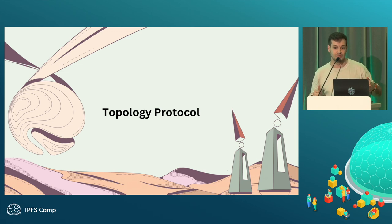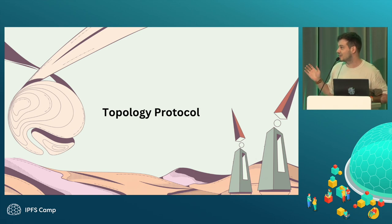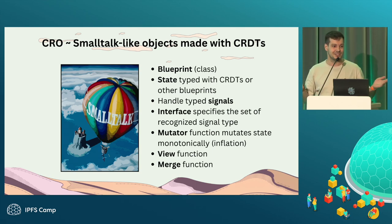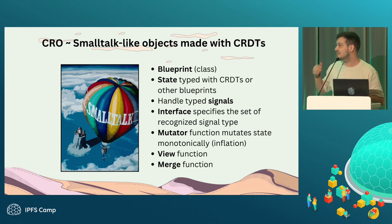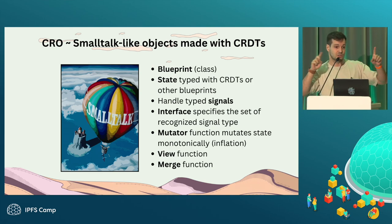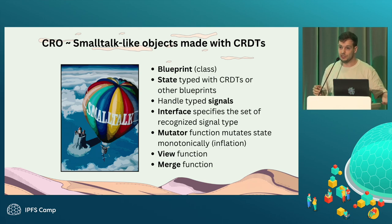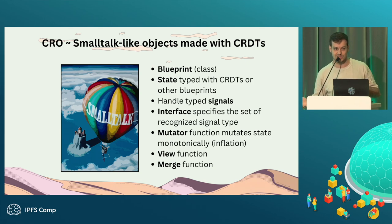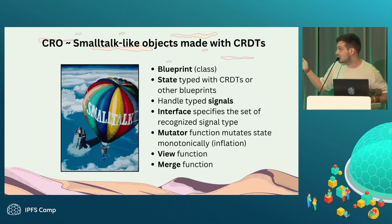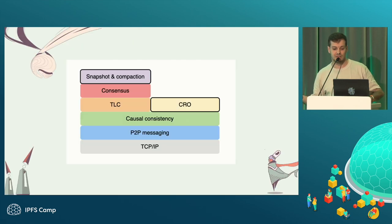We thought YJS is super cool and nice, but we also want to build generic objects on top of it. So we decided on creating Topology Protocol. Topology Protocol is based on Smalltalk objects. We want to have blueprints for those types of objects, interfaces for them, and signaling between those objects. Then we have view functions, merge functions — which are requisite for CRDTs — and mutator functions, which are going to change the state. The mutator functions need to be monotonic because of the CRDT constraints.